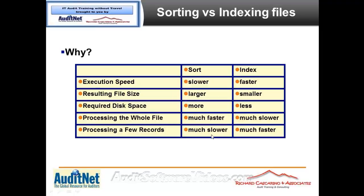If I'm only going to process a few records, sorting 4 million records just to look at 20 of them is going to take forever compared to indexing the file and then just looking at those items on the index. Auditors are frequently caught with this — should I index it or should I sort it? The automatic thing normally is just to index it, but there are times when it can be more efficient for multiple full-file inquiries to use a sorted file rather than repeatedly hitting back on the index.